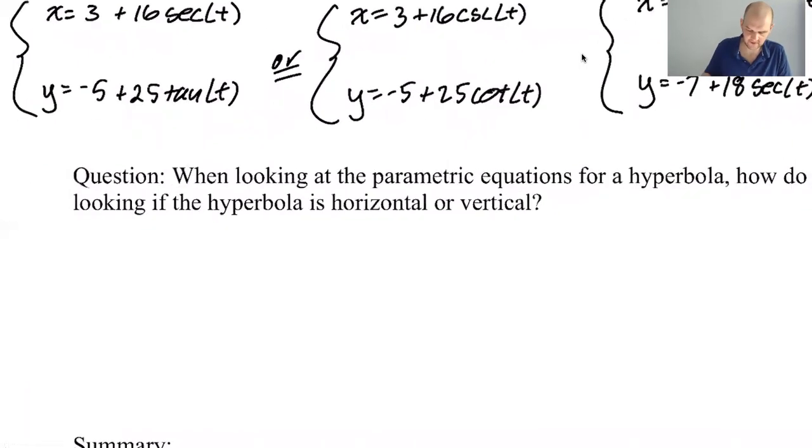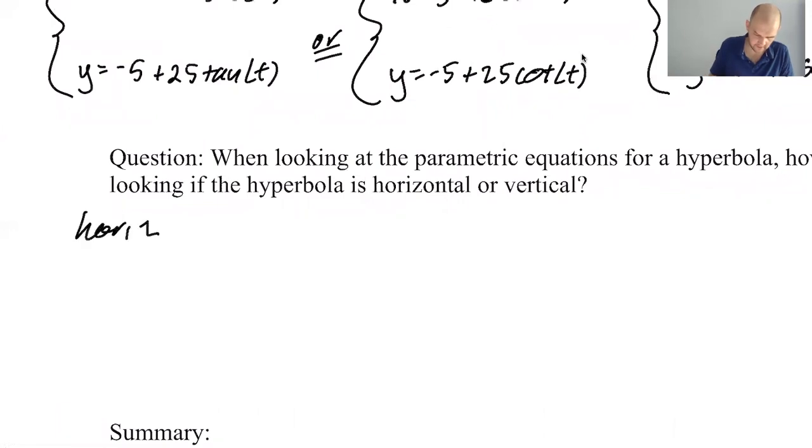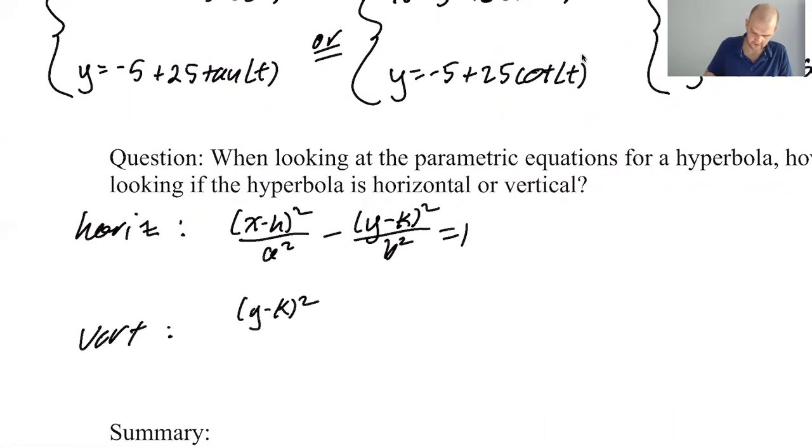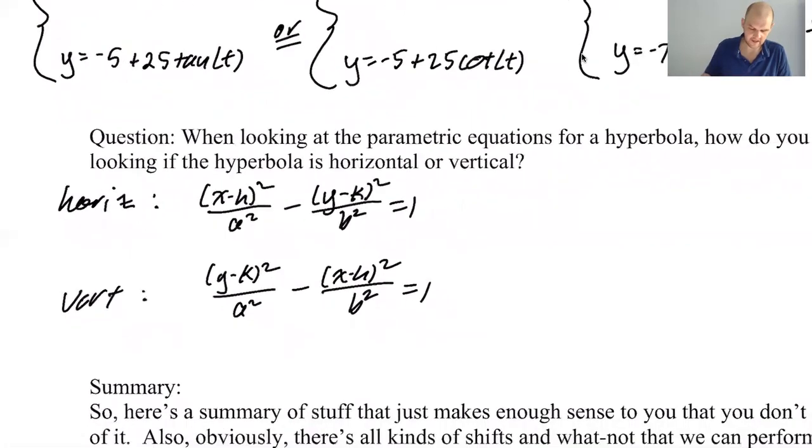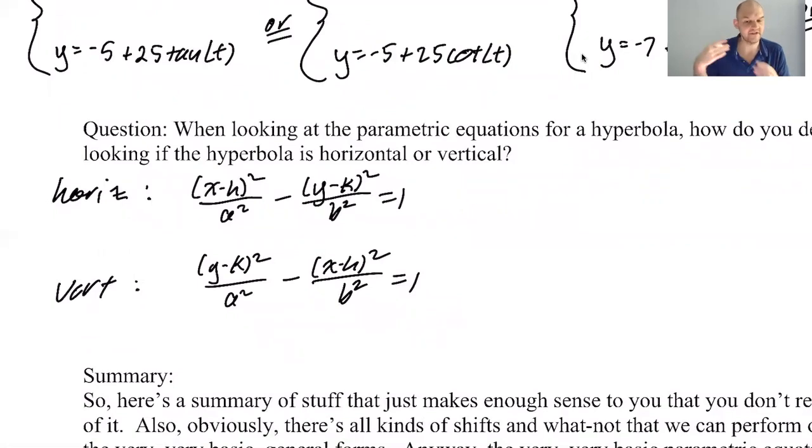What does the horizontal one look like? Horizontal is (x - h)² over a² minus (y - k)² over b² equals one. Vertical is going to be (y - k)² over a² minus (x - h)² over b². Remember, a and b don't switch, it's x and y that switch. And x always goes with h, y always goes with k. That's always a chance for you to make a silly mistake.